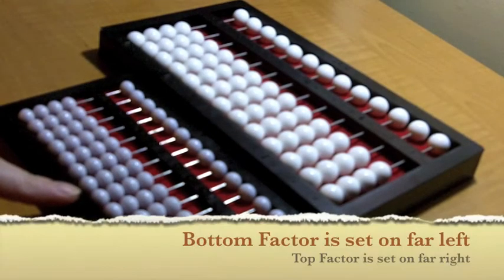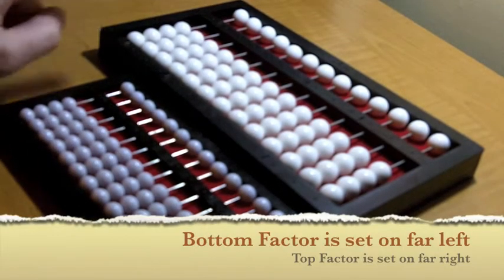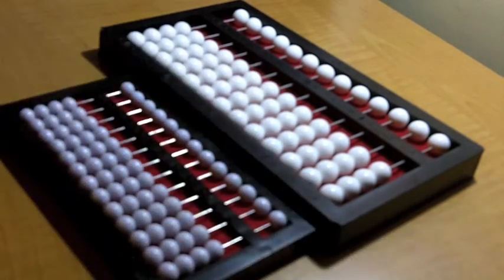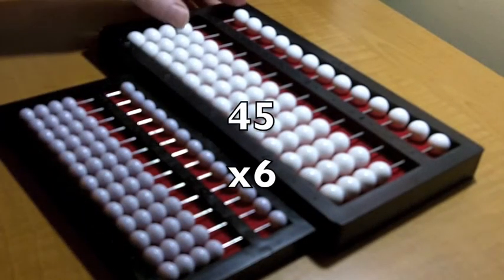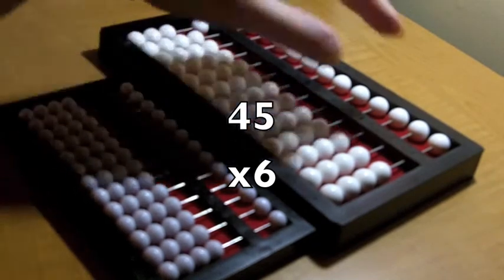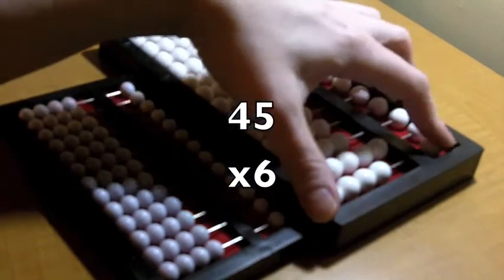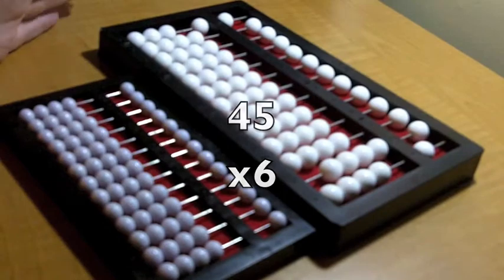You're going to set the bottom factor on the far left and the top factor on the far right. For the problem 45 times 6, I'm going to set 6 on the far left and 45 on the far right.